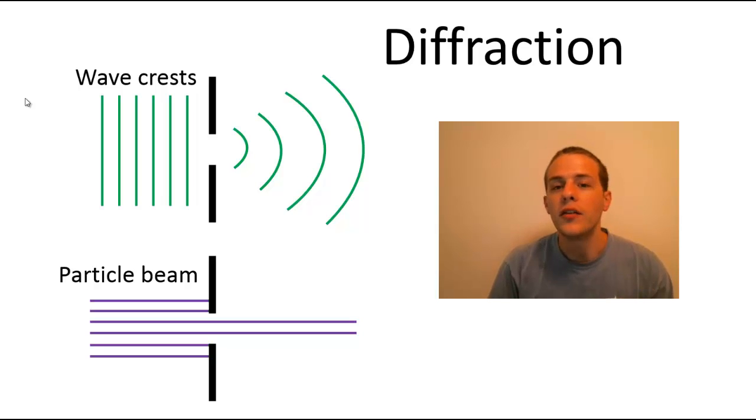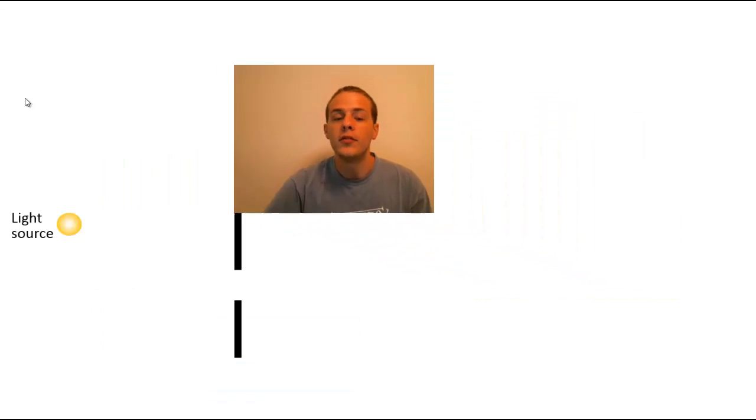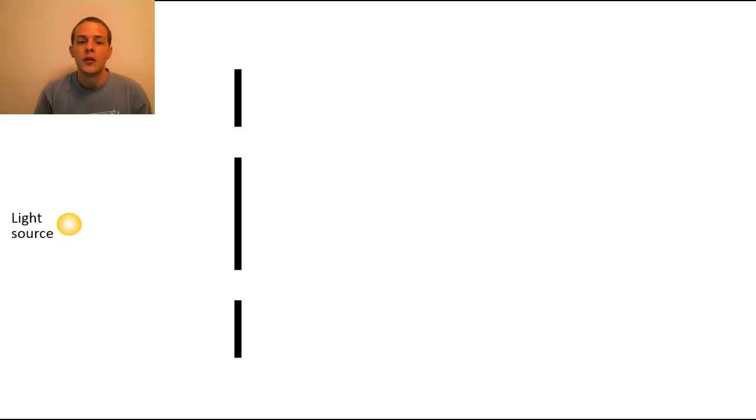Now there's a very interesting thing that occurs that involves both interference and diffraction when you pass waves through two slits. So suppose we're passing some waves, some light waves, through two slits that are separated by a distance that is comparable to the wavelength of the light.